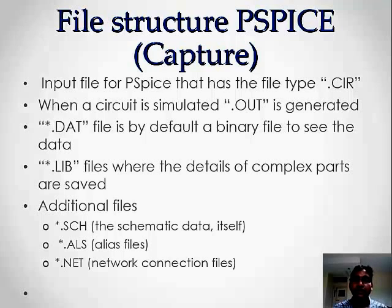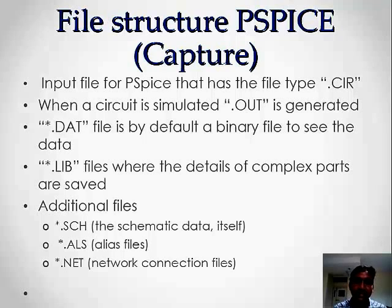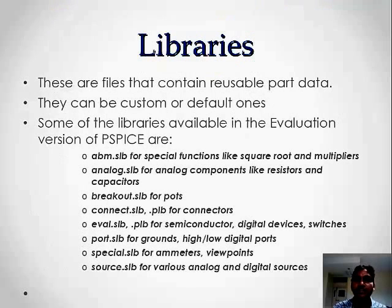When the circuit is simulated, an output file is generated. Other file types include .dat files containing binary data, and .lib library files where different components are present, from which we take components to develop the circuit. Additional files include .sch schematic files, .als files, and .net network connection files.